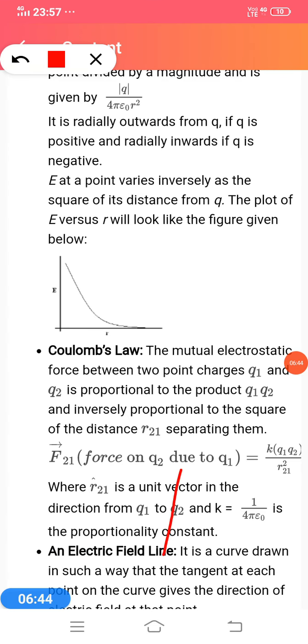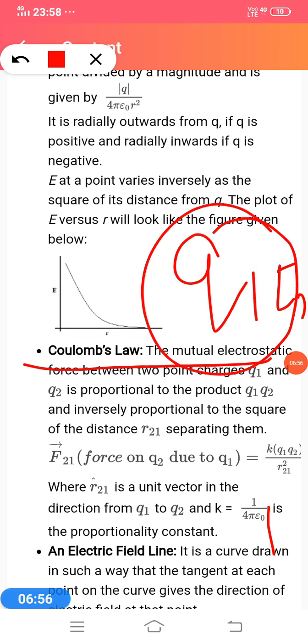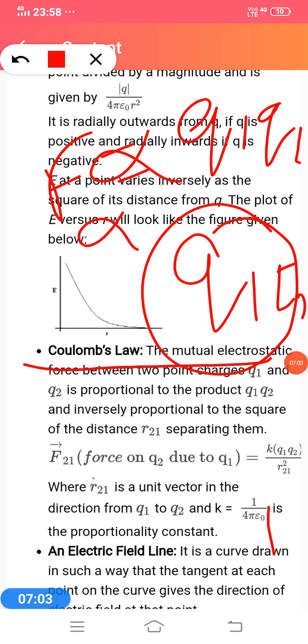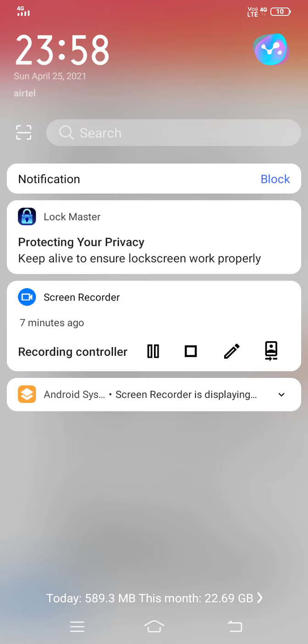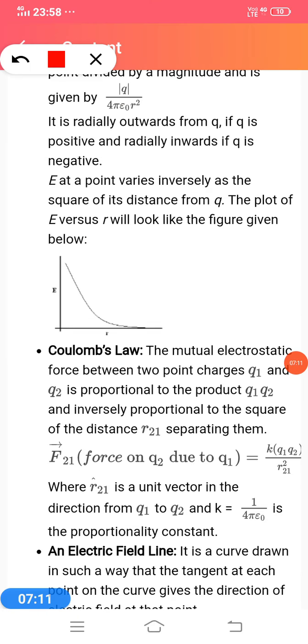Coulomb's law: The force between two point charges q₁ and q₂ is directly proportional to the product of the charges and inversely proportional to the square of the distance between them.